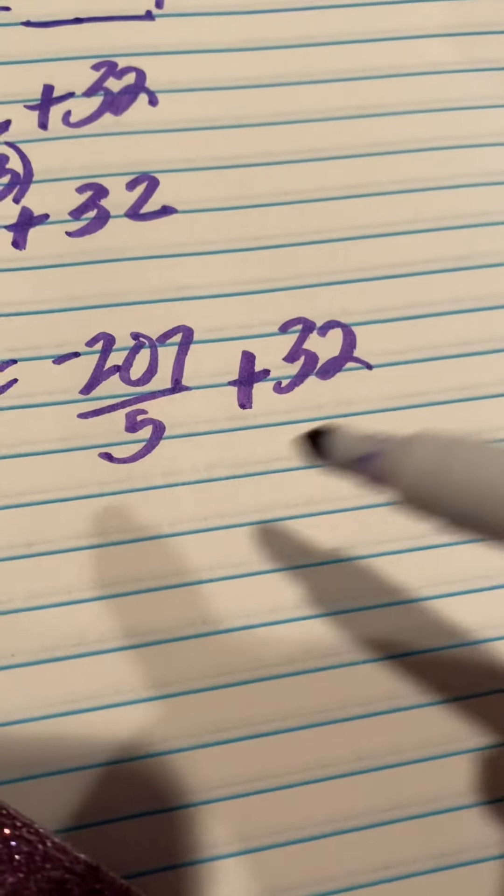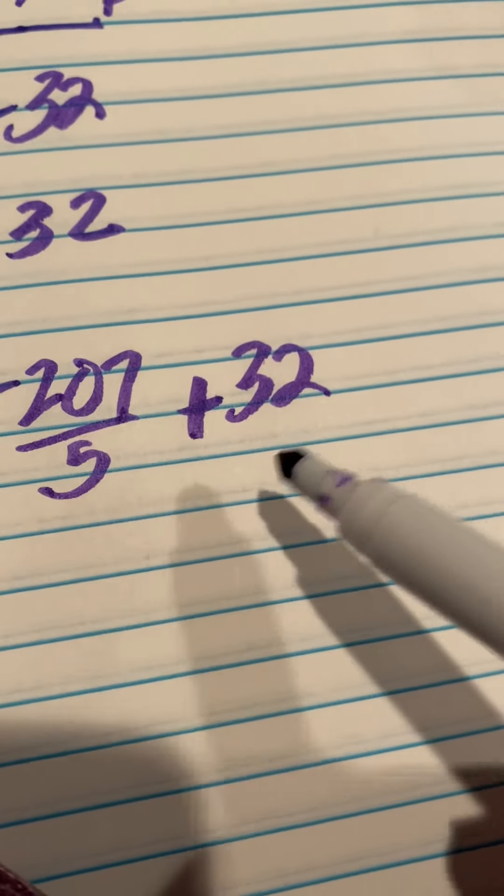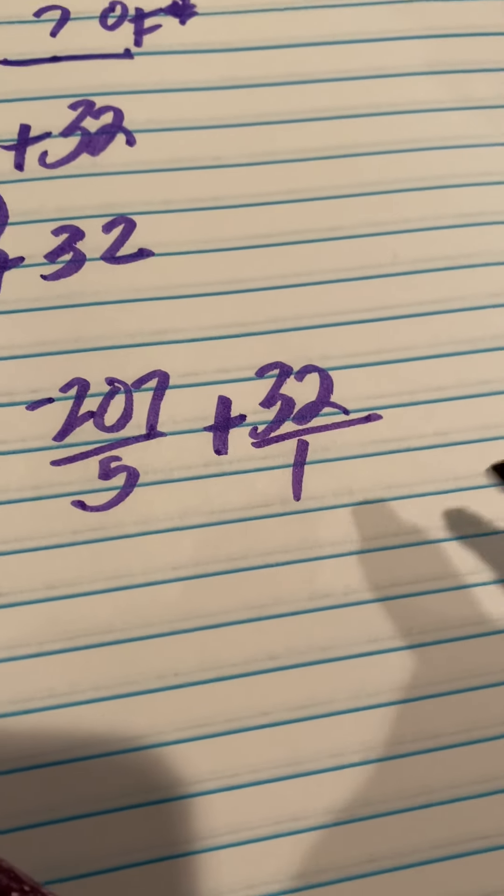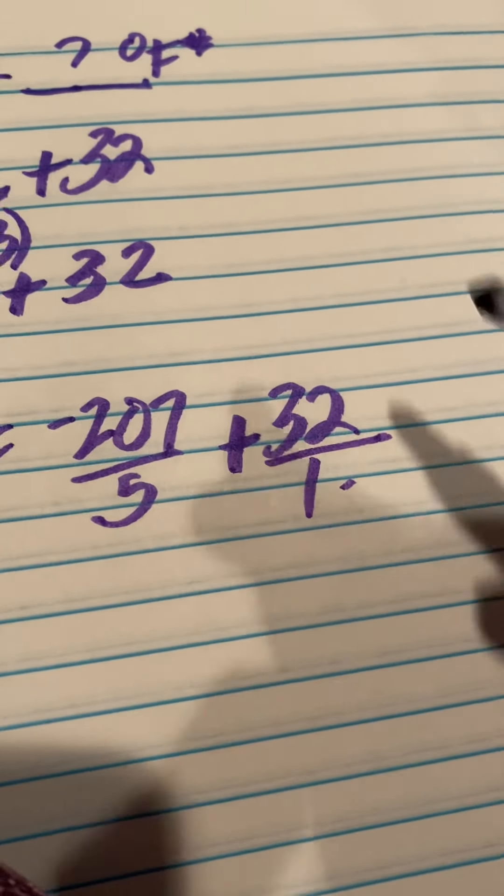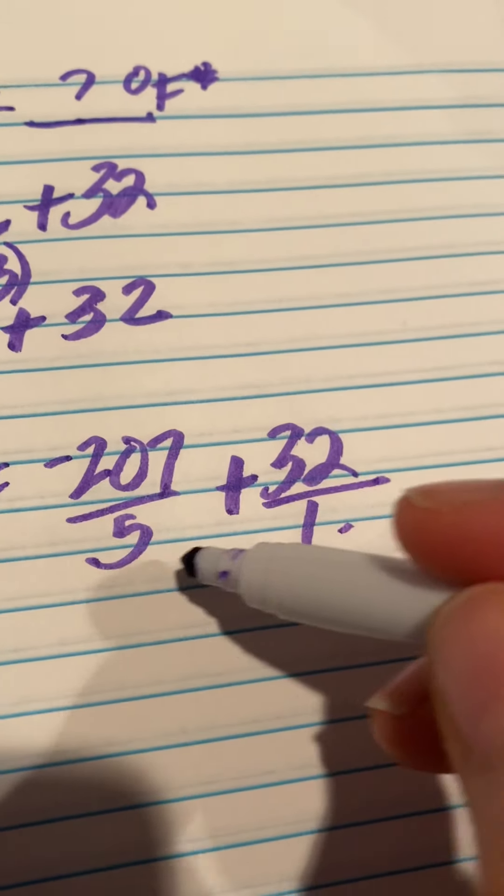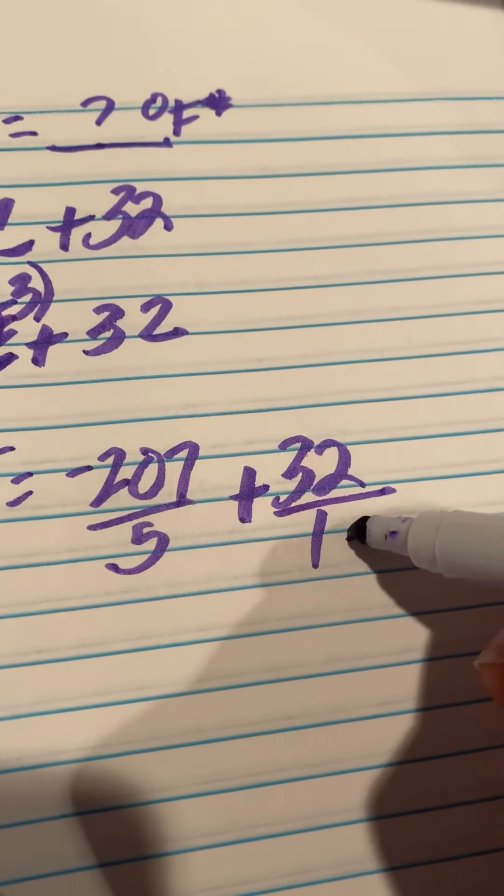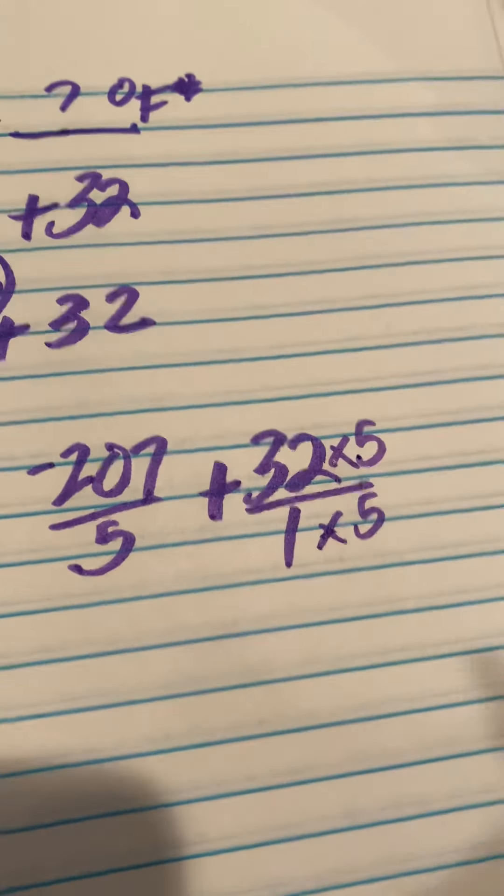Well, we see we have two fractions here. When we have fractions, we have to have the same denominator. This isn't a fraction yet, but I'll make it a fraction now. So we see we have different denominators. We have to make them the same. Do you remember what that rule is? If this is 5, this is 1, the common denominator would be 5. So we multiply by 5, and we have to do the same thing to the top.